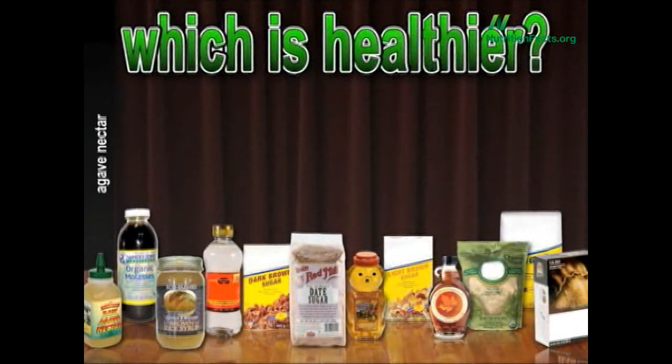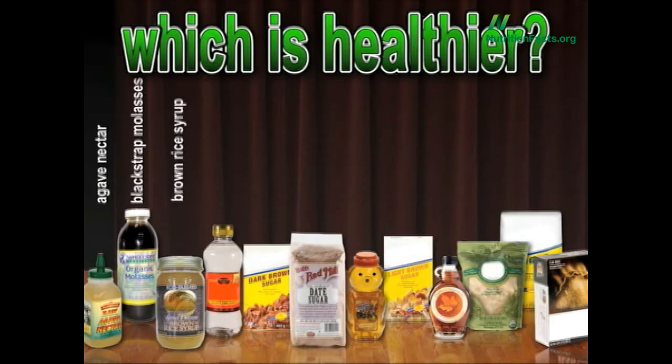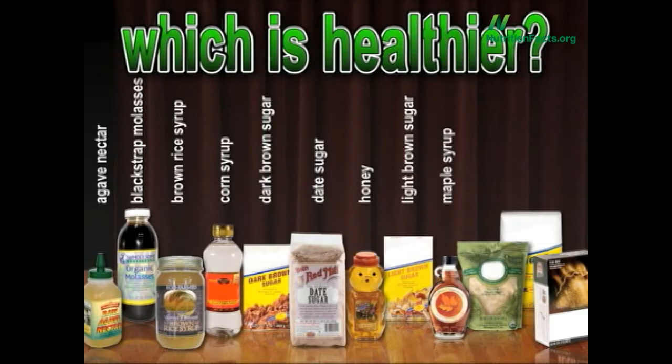Which is healthier? In alphabetical order: agave nectar, blackstrap molasses, brown rice syrup, corn syrup, date sugar, dark brown sugar, light brown sugar, maple syrup, honey, raw cane sugar, plain old sugar sugar, or turbinado sugar.